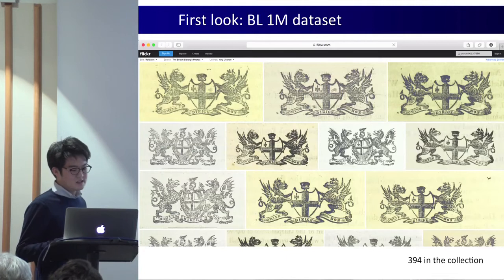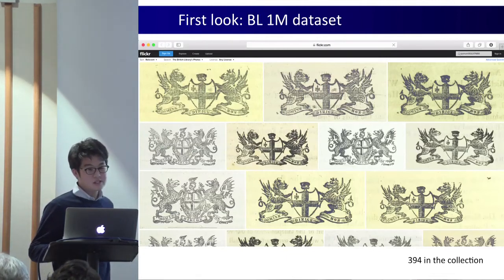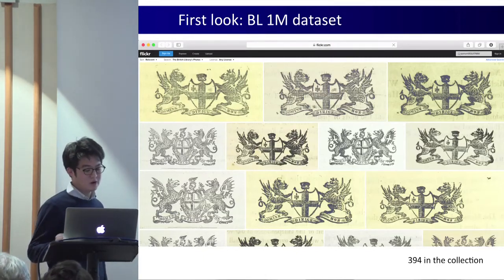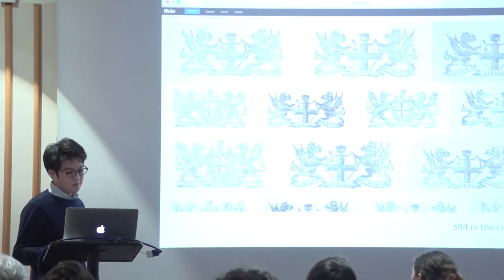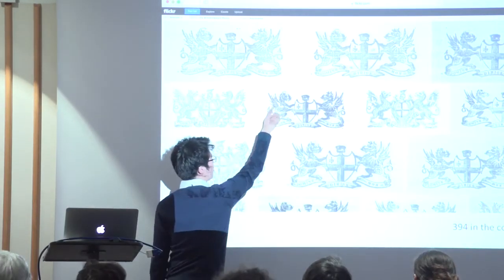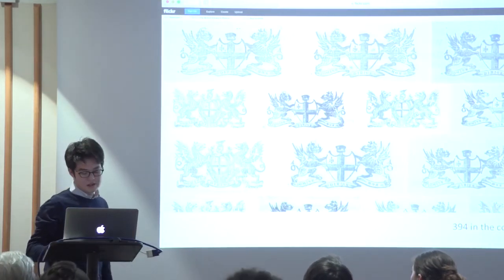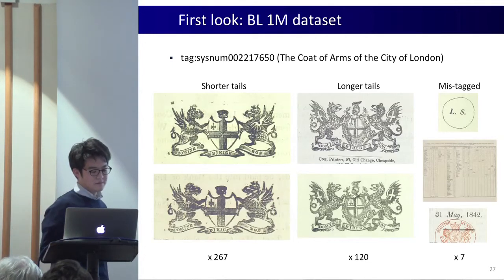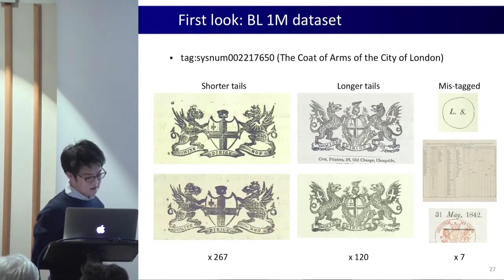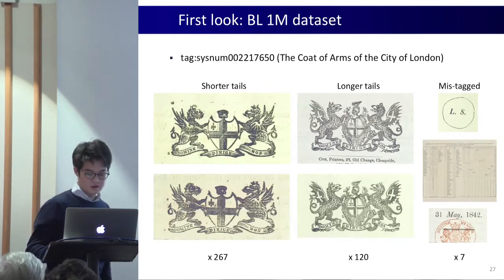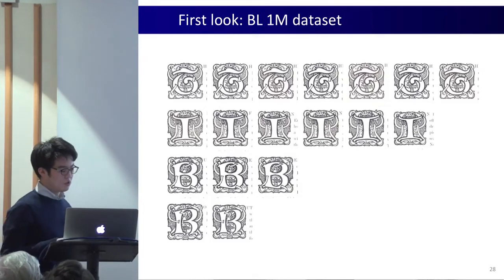When we had a look through the tag clusters on Flickr, we could already make some interesting observations. Here we're looking at about 400 representations of the coat of arms of the City of London which have already been tagged. But it appears the prints come from two different woodblocks — one with the long tail and some with short tails — but they're mixed up in the collection. Using our algorithm, it only took a matter of seconds to find that there are 267 of one type and 120 prints of the other, and there are seven mistagged images in the collection. Similarly, there are many more repeated examples in the British Library collection.